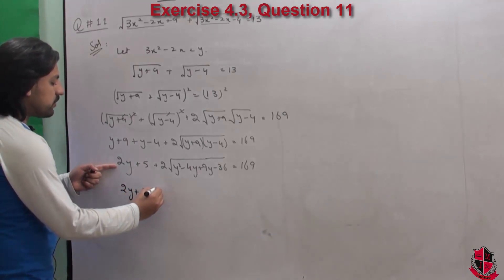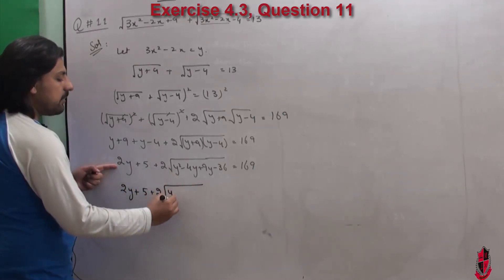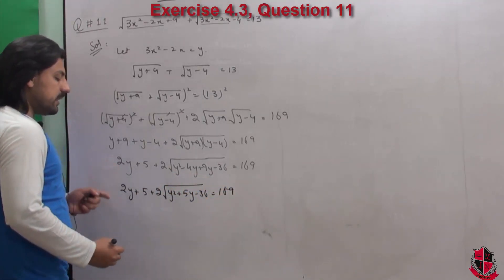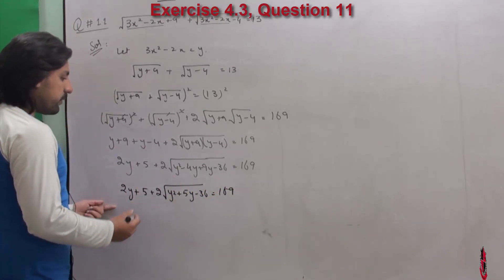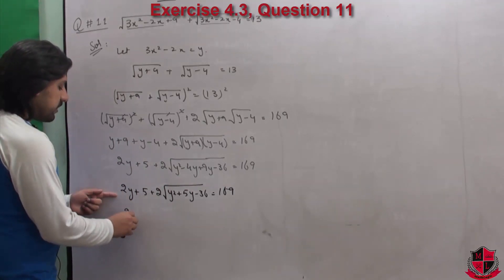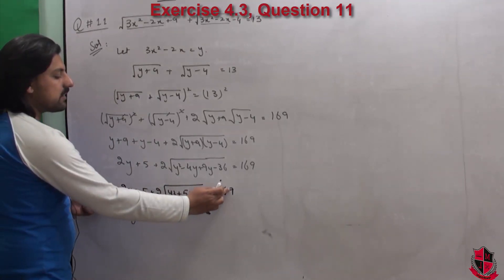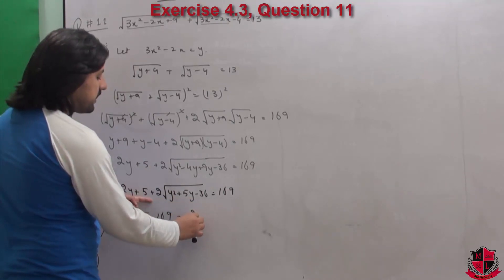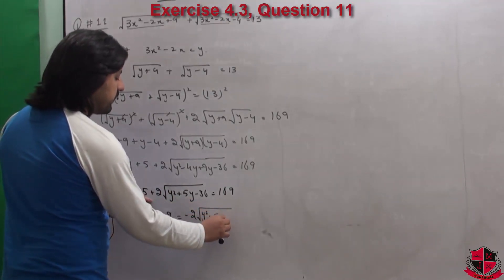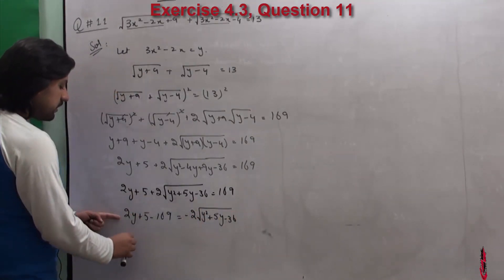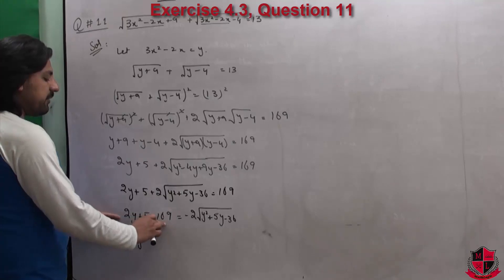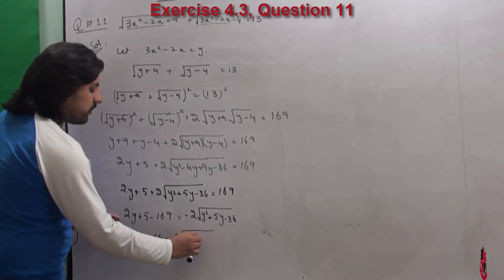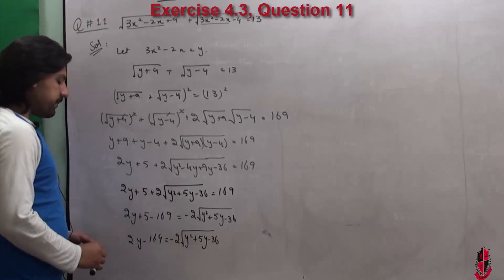So we have 2y + 5 + 2√(y²+5y-36) = 169. अब square root वाली term एक तरफ और बाकी दूसरी तरफ करें: 2√(y²+5y-36) = 169 - 2y - 5, which gives 2√(y²+5y-36) = 164 - 2y, and with a minus sign: -2√(y²+5y-36) = 2y + 5 - 169 = 2y - 164.